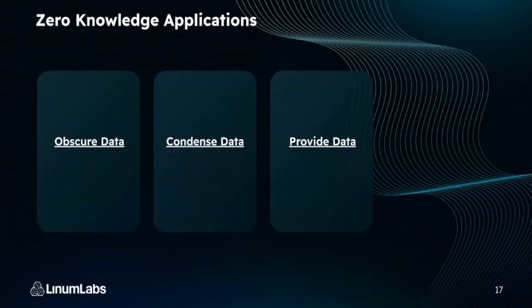There are three main applications of zero knowledge proofs. The main one is to obscure data, but a great one is to condense data, and it can also be used to provide data. In the condense-data example, we can compress very dense computations into small things to compute and store — which enables really advanced computations on blockchains where it's usually not possible due to storage and gas costs.